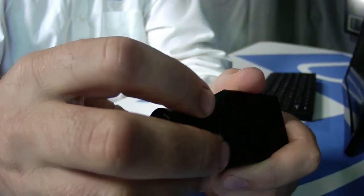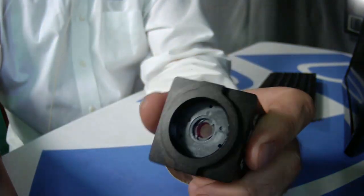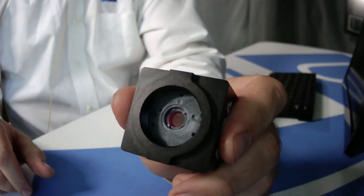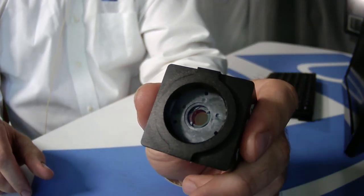Inside here we have the sensor, so we can see we've got in here a one-third inch chip. It's a backlit sensor putting out 1080p 60.